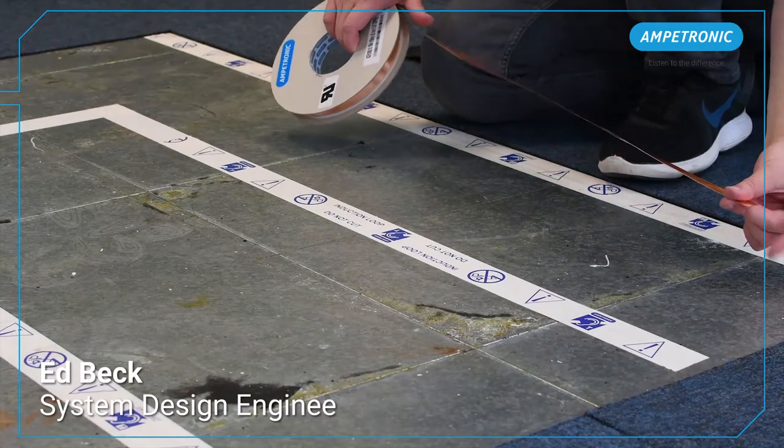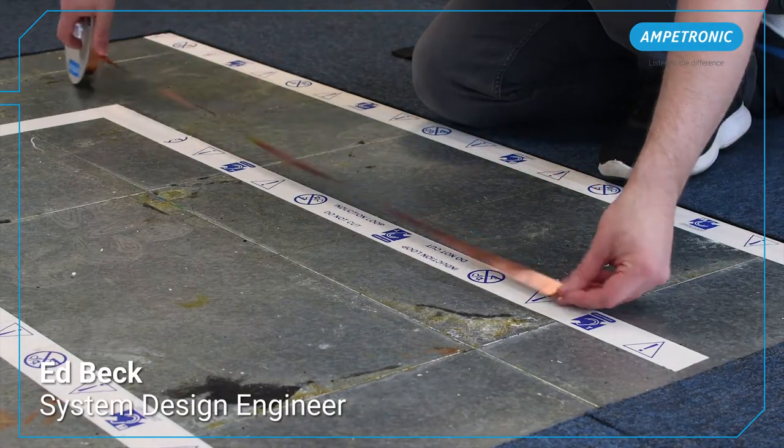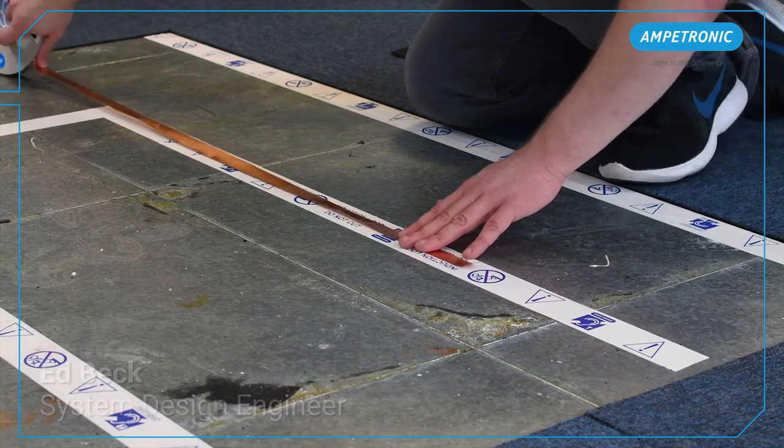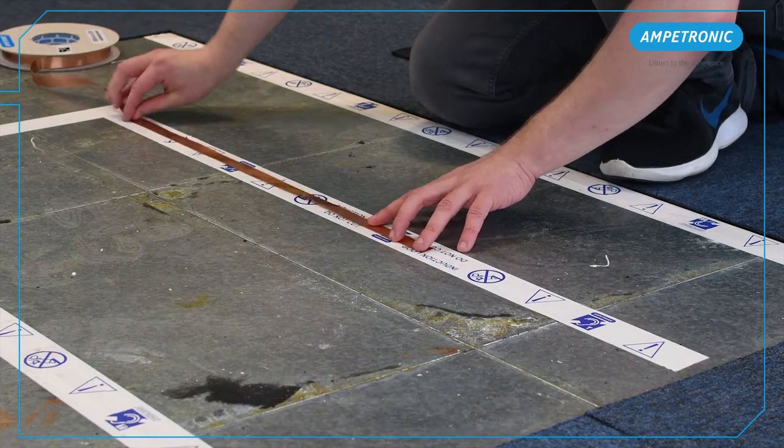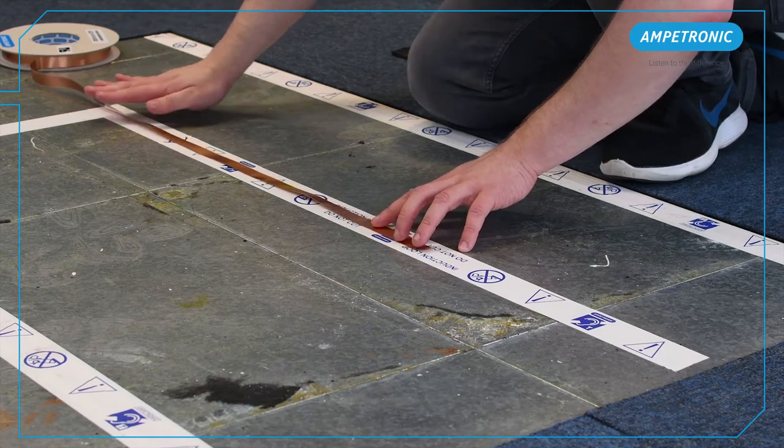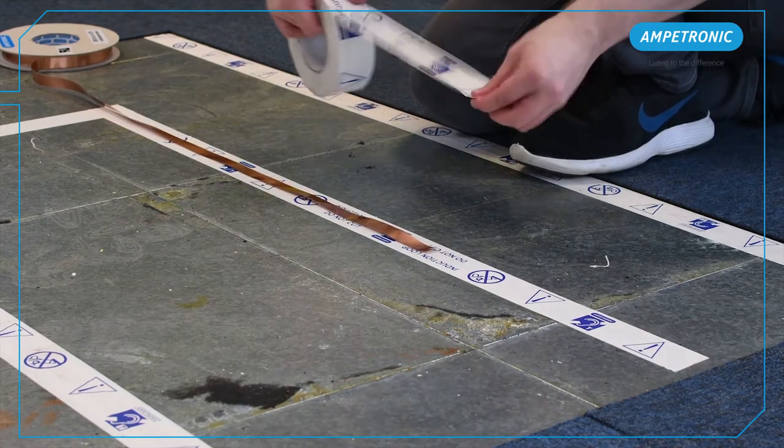Ampetronic Flat Copper Tape is the default choice when installing loop cable under floor coverings. It comes in a range of sizes and reel lengths. Here, we're working with the standard 1.8mm² tape in a 100m reel.